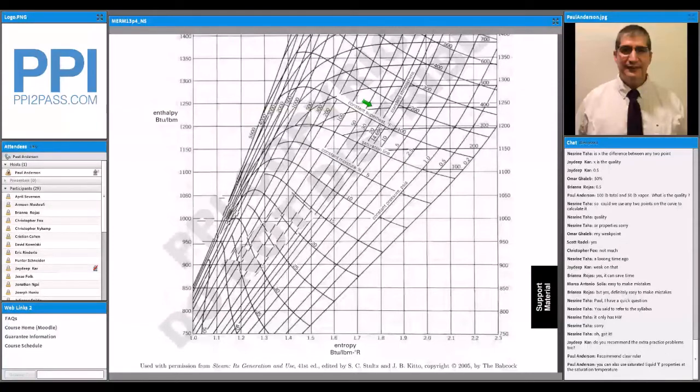Any questions on the basics of the steam tables? We're going to do a workshop here in a slide or two just to really kind of cement some of these ideas. The MERM has a real good set. If you prefer Keenan & Keys or ASME, just find something you're comfortable with.